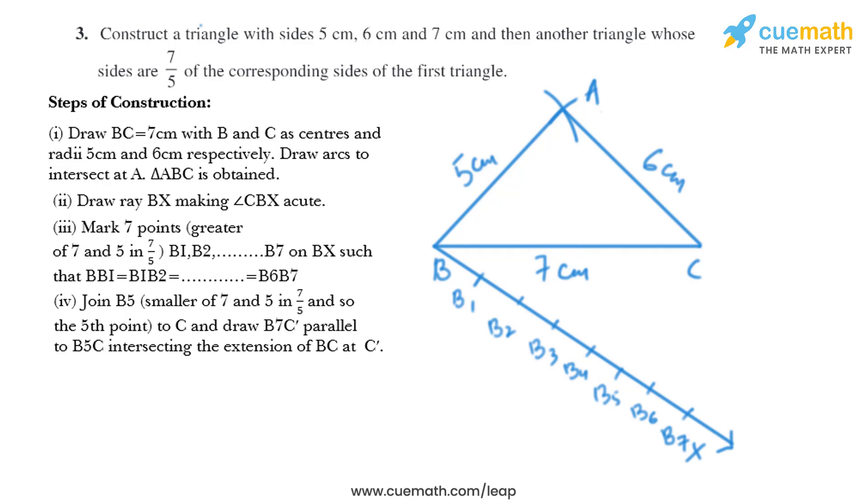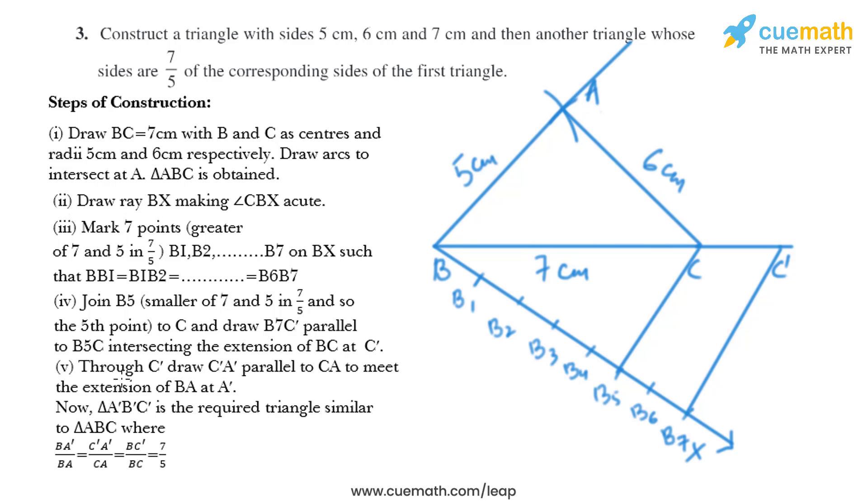Now in the next step we need to join B5 to C, so we'll draw a line like this. Then we need to join B7 to C dash, so we'll draw a line like this and name this point as C dash.